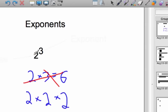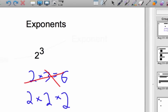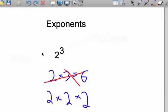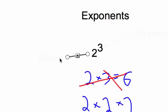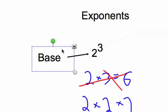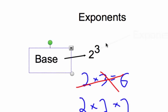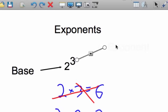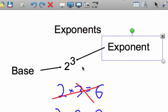So we have 2 being multiplied 3 times. And the way we can think about this, that right there, that 2, we have a word for it. It's called the base. It's the number that's being multiplied. As you can see, 2 is being multiplied. And 3, that's called the exponent. The exponent tells you how many times to multiply the base.